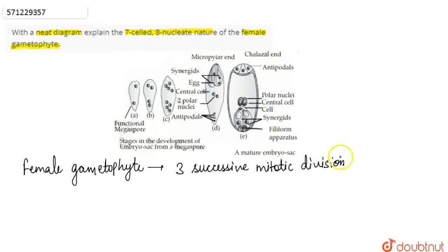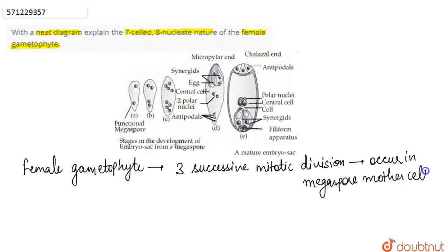Basically what happens is that the female gametophyte is formed when the three successive mitotic divisions occur in megaspore mother cells. The megaspore mother cell undergoes three successive mitotic divisions. During the mitotic division, one cell divides to form two, so in case of three successive mitotic divisions, the female gametophyte becomes 8-nucleate.